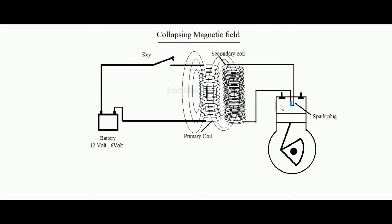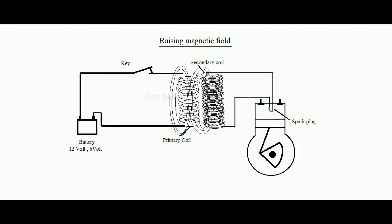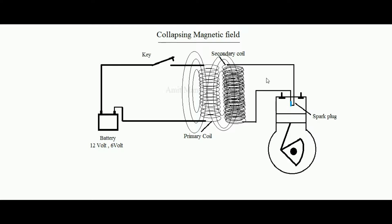However, the polarity is reversed when the key is opened. But spark development is irrespective of polarity between the electrodes — it doesn't matter which terminal is positive and which is negative. So a spark will develop when key K is pressed and also when it is opened again.